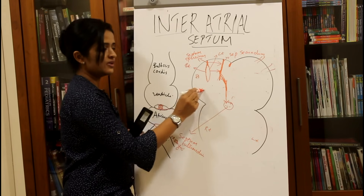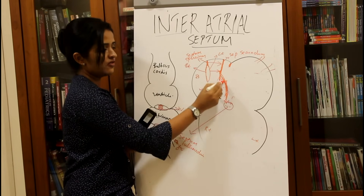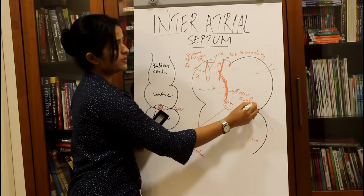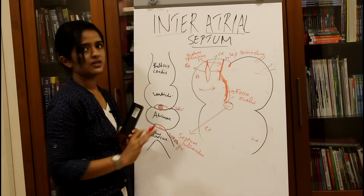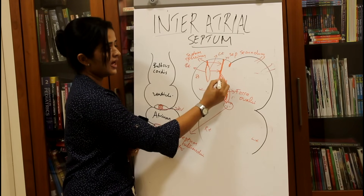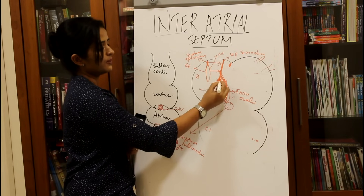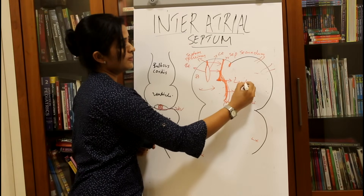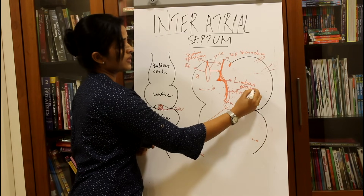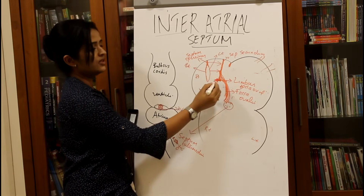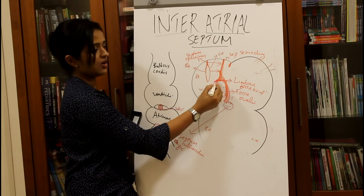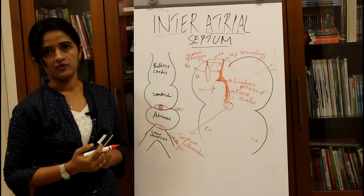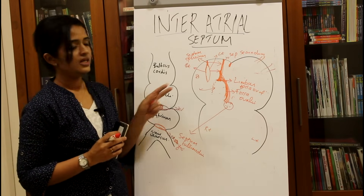When viewed from the right side, the septum primum forms a depression in the inter-atrial septum called the fossa ovalis. The free lower edge of the septum secundum forms an arch-shaped ridge above the fossa ovalis called the limbus fossa ovalis. So fossa ovalis is the depression formed by septum primum, and the limbus fossa ovalis is formed by the free edge of the septum secundum arching over it.